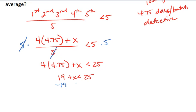Subtract 19 from both sides. We're left with x is less than 6.